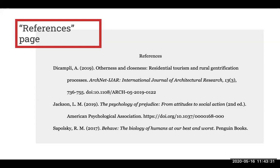Okay, so we've reviewed how to create APA references. Now let's put them together into a references page. A references page should begin on a brand new page, separate from the rest of your research paper. The page should be labeled "References," centered at the top of the page. Each of your references will be listed on this page and placed in alphabetical order according to the first word of the reference. For example, the first one is DeCamply, which comes before J for Jackson, which comes before Sapolsky.